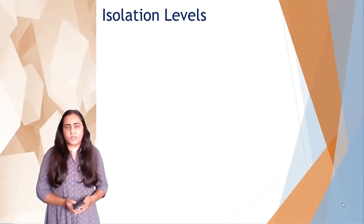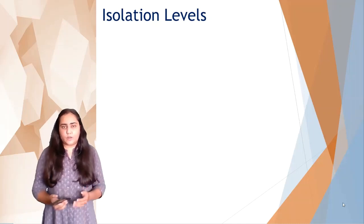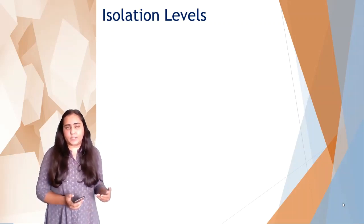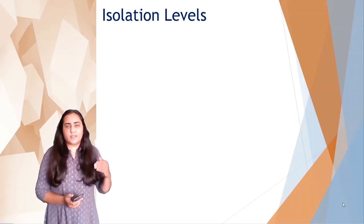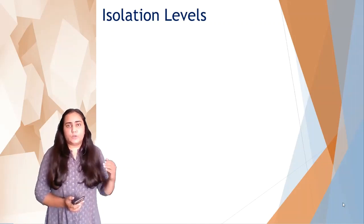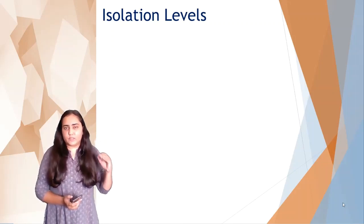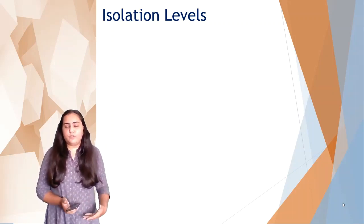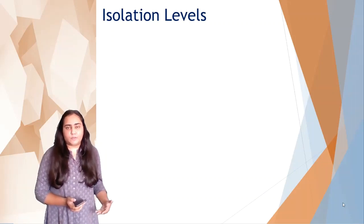In practice we use concurrent schedules. Now we are going to study isolation levels. Isolation and concurrency are opposites of each other, but in any system you can decide how much isolation and how much concurrency you wish to have. There are four levels: level one has the highest isolation and least concurrency, and level four has the least isolation and maximum concurrency.